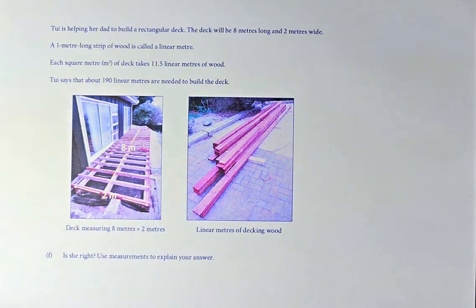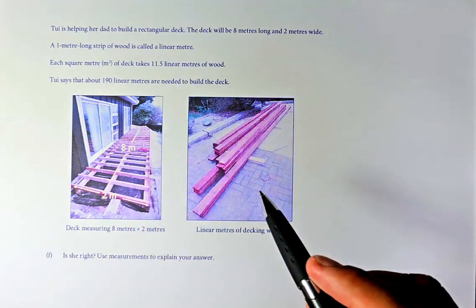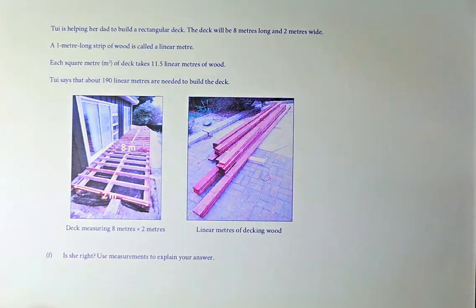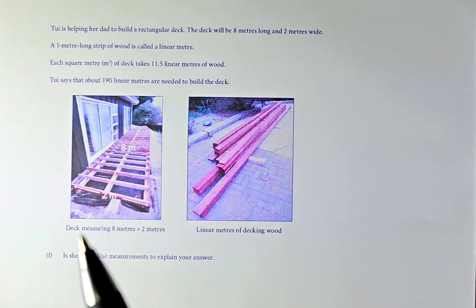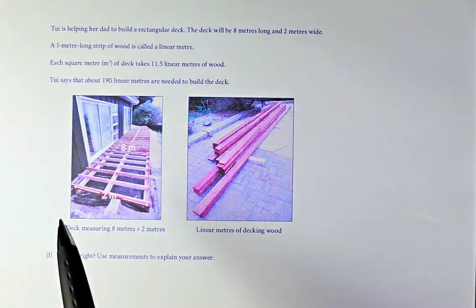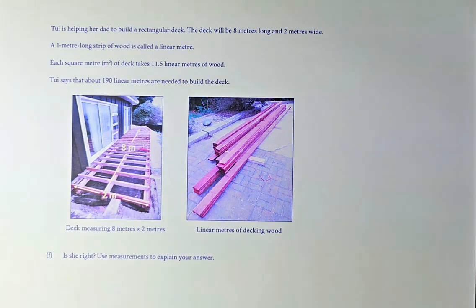A 1 meter strip of wood is called a linear meter. So, 1 strip of wood is called a linear meter. Each square meter takes 11.5 linear meters of wood. Tui says about 190 linear meters are needed to build the deck. Is she right? Use measurement to explain the answer.